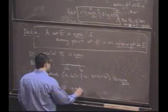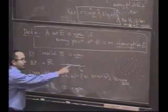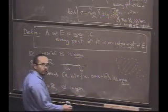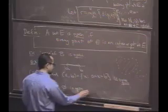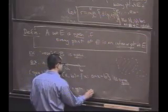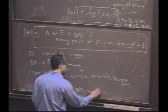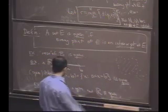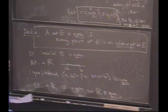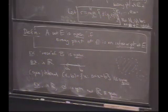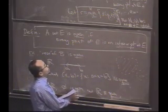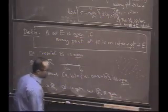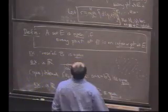What about the subset R — the whole real line? Is that open? Yes, because you can clearly find an interval around any point. We've defined the term open, but we have not defined the term closed. So let's do that.